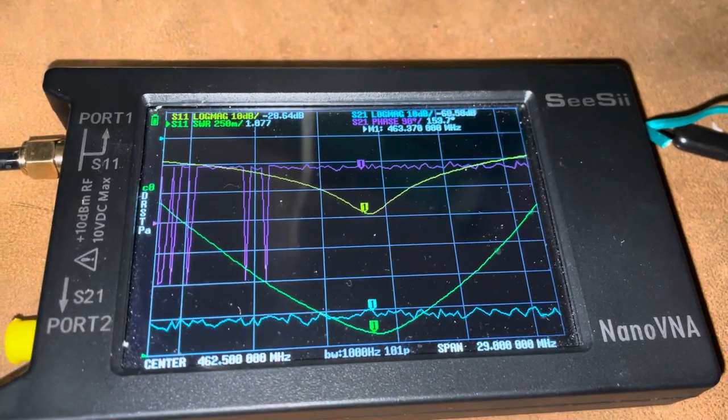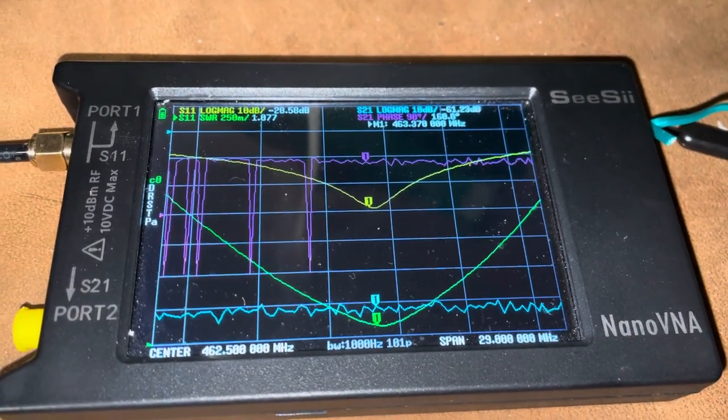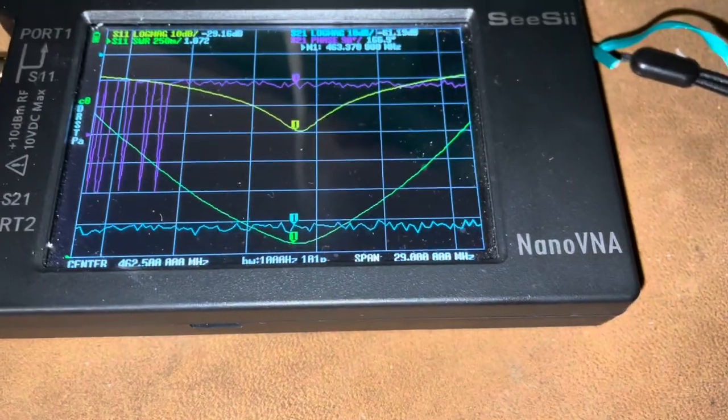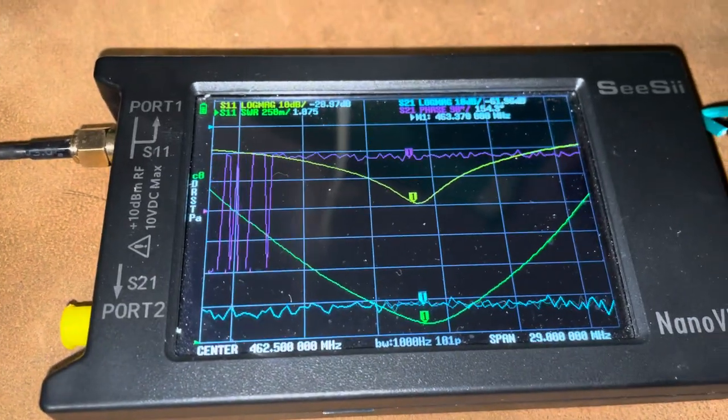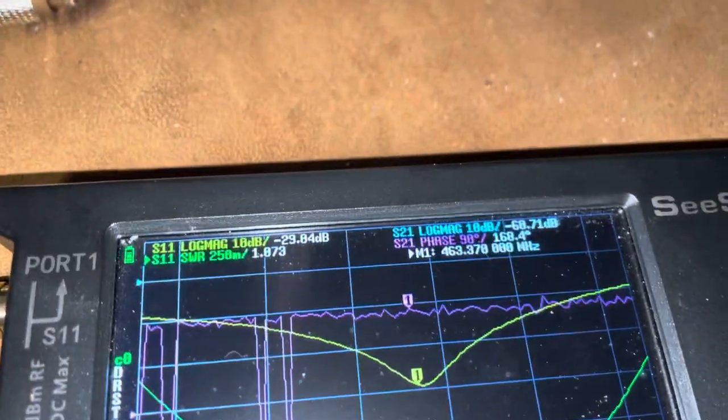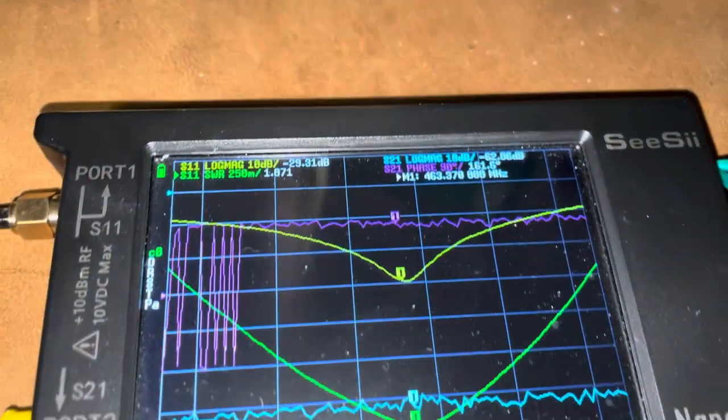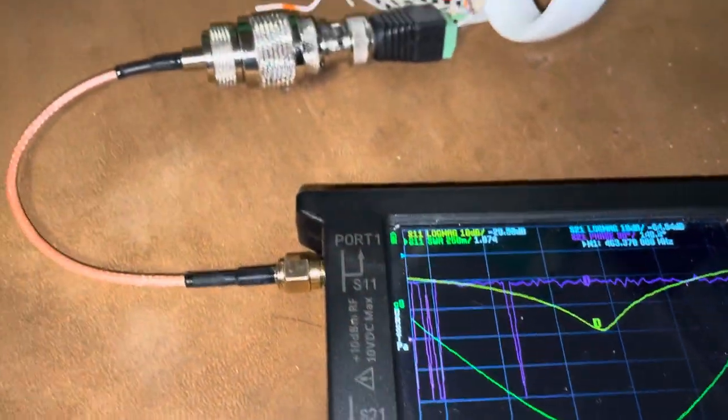So, the SWR is 1.071, and it's on 463 MHz. And what is the antenna?